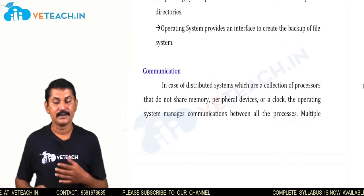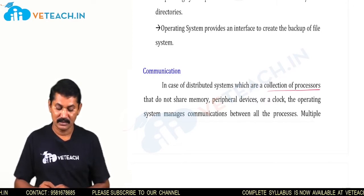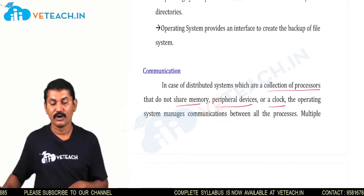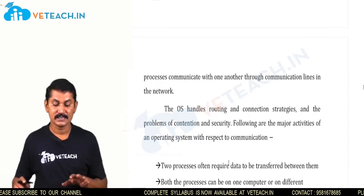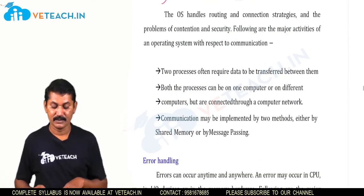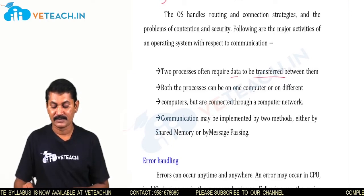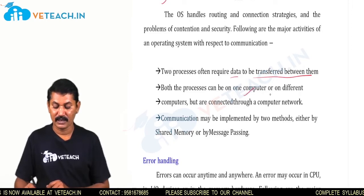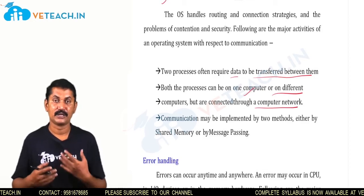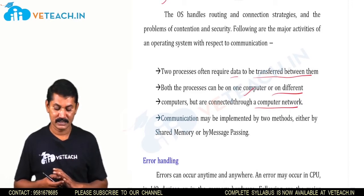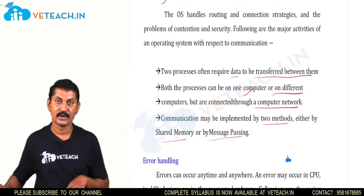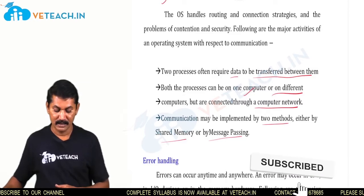For communication, in a distributed system — which is a collection of processors that do not share memory, peripheral devices, or a clock — the operating system manages communication between all processes. Multiple processes communicate with one another through communication lines in the network. Two processes often require data to be transferred between them; both processes can be on one computer or on different computers. Communication is implemented by two methods: either by shared memory or by message passing.